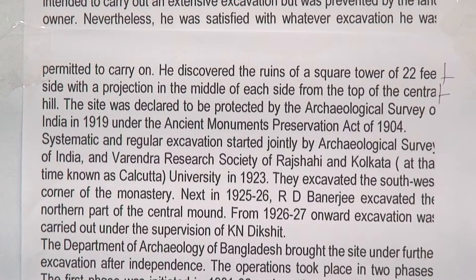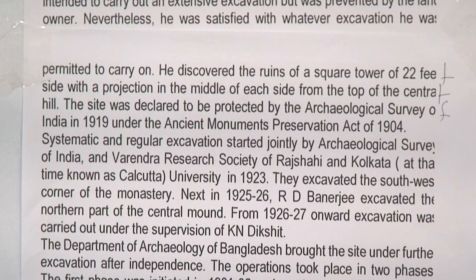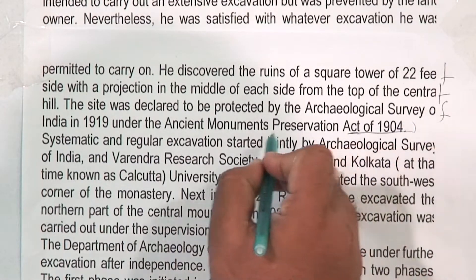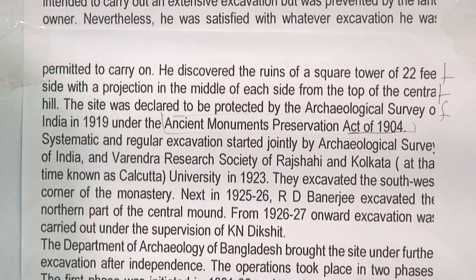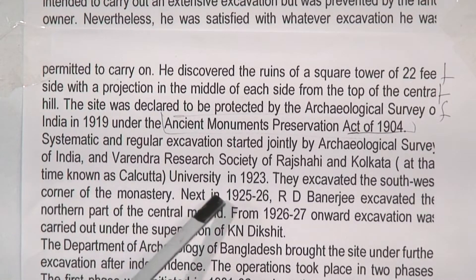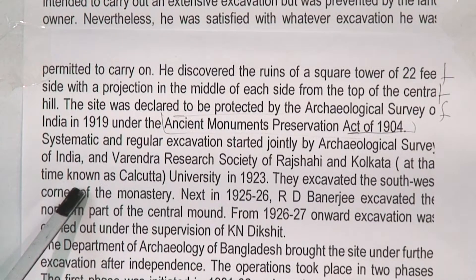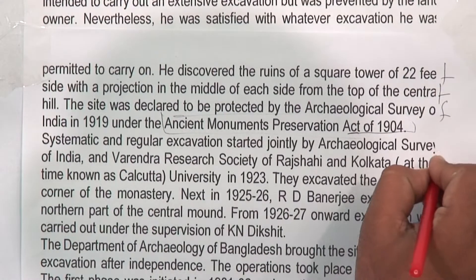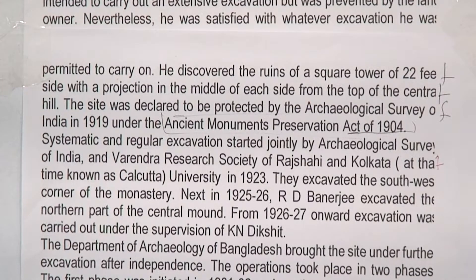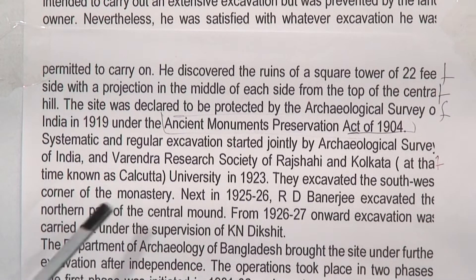The site was declared to be protected by the Archaeological Survey of India in 1890 under the Ancient Monument Preservation Act 1904. High systematic and regular excavation started jointly by the Archaeological Survey of India and the Varendra Research Society of Rajshahi and Calcutta University in 1923. They excavated the southwest corner of the monastery.